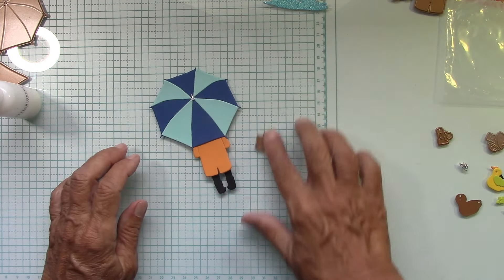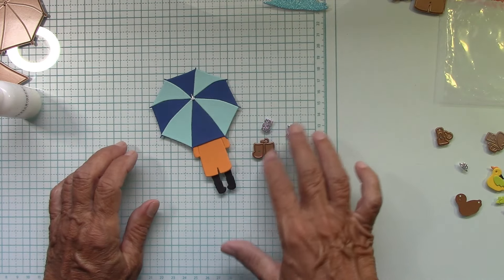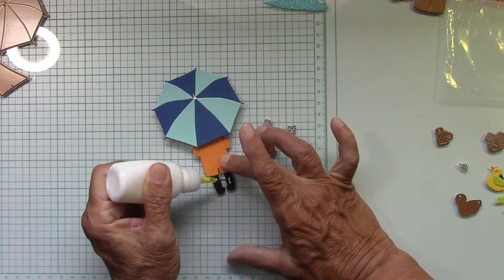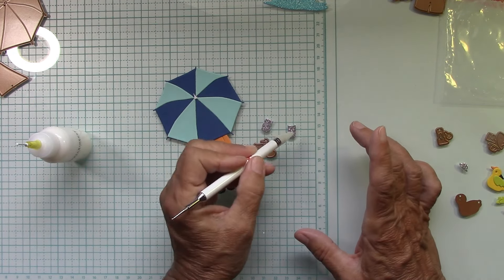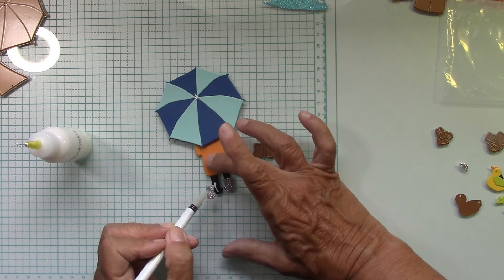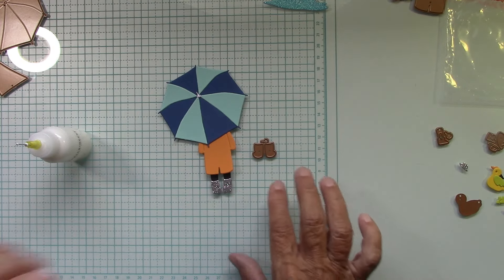And now there's the little boots. I made those silver out of the glitter cardstock, so let's put those on her feet. Just like that, cute. Adorable.